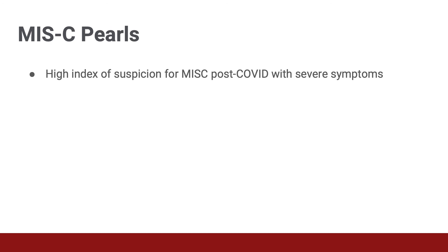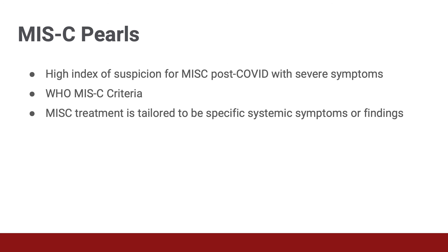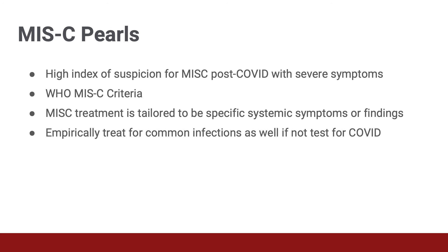We hope after this talk you have a high index of suspicion for MIS-C in any child presenting with severe systemic symptoms, especially if they have a history of COVID exposure or if they have comorbidities. The WHO criteria serve as a nice guide to diagnose MIS-C, especially if a child presents with a fever greater than three days, has a rash and shock and multiple lab abnormalities, as this will assist in expedient hospitalization and symptom-specific treatment to prevent morbidity and mortality in a pediatric patient due to COVID-19. Finally, empirically treat for common infections while treating for MIS-C if you are unable to test for COVID, as MIS-C may mimic other serious infections in children. Thank you very much.